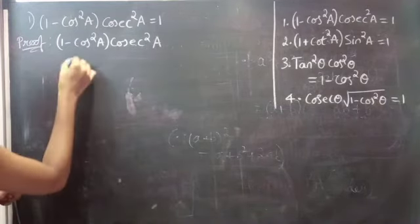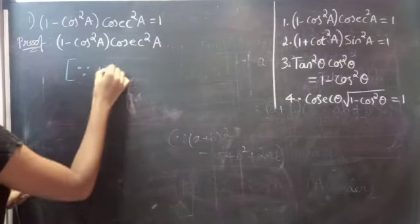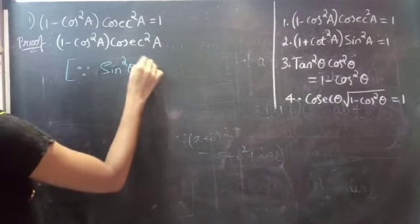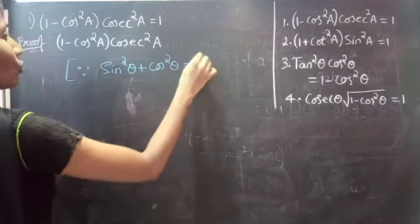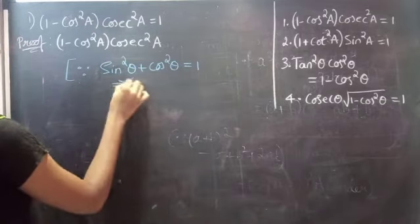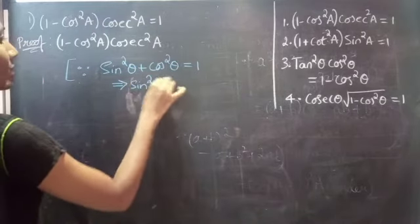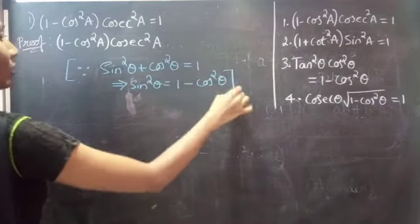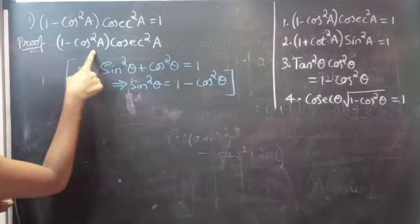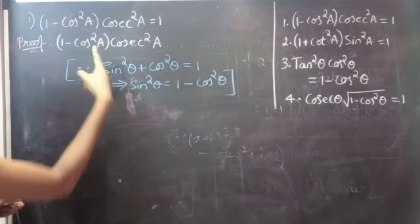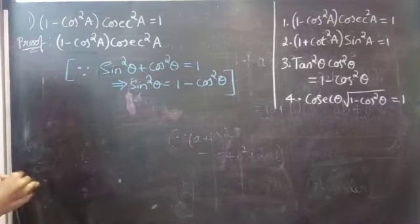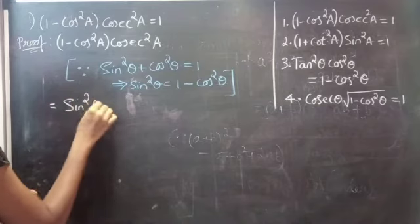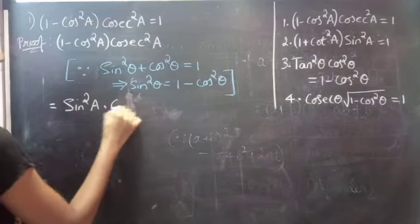Since we know that sin²θ + cos²θ = 1, from this you get sin²θ = 1 - cos²θ. Now, here we have (1 - cos²A), so we can replace it with sin²A. So this equals sin²A · csc²A.